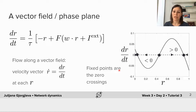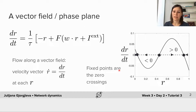So rather than plotting R versus T, seeing how the activity changes in time, here we are plotting the change in R as a function of T as a function of the population R, namely dr/dt as a function of R. Because the F-I curve F is non-linear, this dr/dt function goes up and down several times as we can see on this plot here, with a few kinks in different parts of this curve.